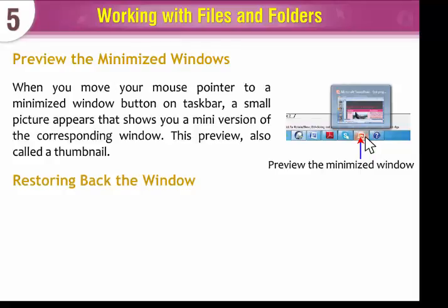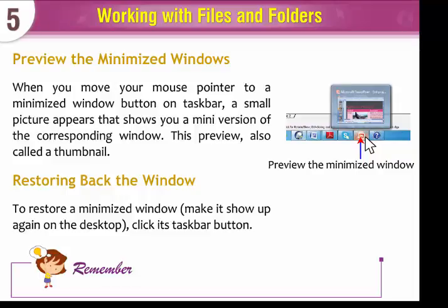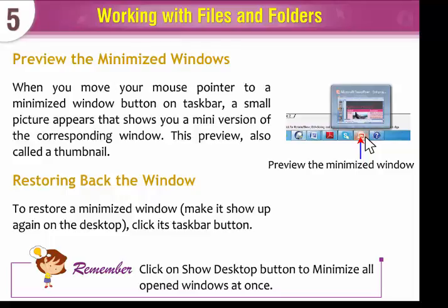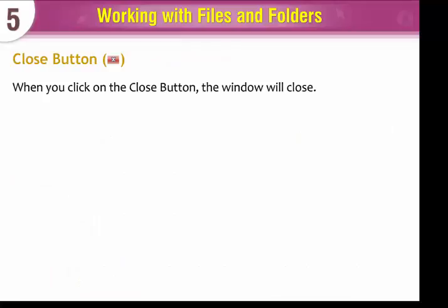Restoring back the window. To restore a minimized window and make it show up again on the desktop, click its taskbar button. Remember, click on the show desktop button to minimize all opened windows at once. Close button. When you click on the close button, the window will close.